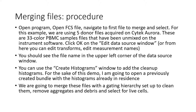For this example, we're using a set of five donor files acquired on a Cytek Aurora — these are 33-color PBMC sample files that have been unmixed on the instrument software already. When you open the file, click OK on the Edit Data Source window. This is where you can edit transforms, measurement names, and so on. You should see the file name in the upper left corner of the data source window.